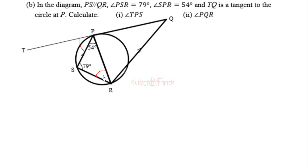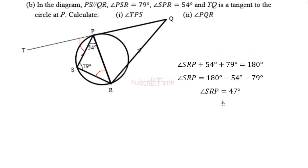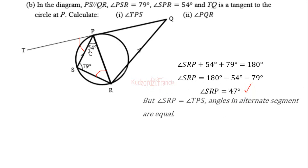Angle SPR is in the same triangle with 79 degrees and 54 degrees. If we add all angles we get 180 degrees. Therefore, angle SRP plus 54 degrees plus 79 degrees equals 180 degrees. So angle SRP equals 180 minus 54 minus 79, which gives 47 degrees. Therefore, by the alternate segment theorem, angle TPS is also 47 degrees.